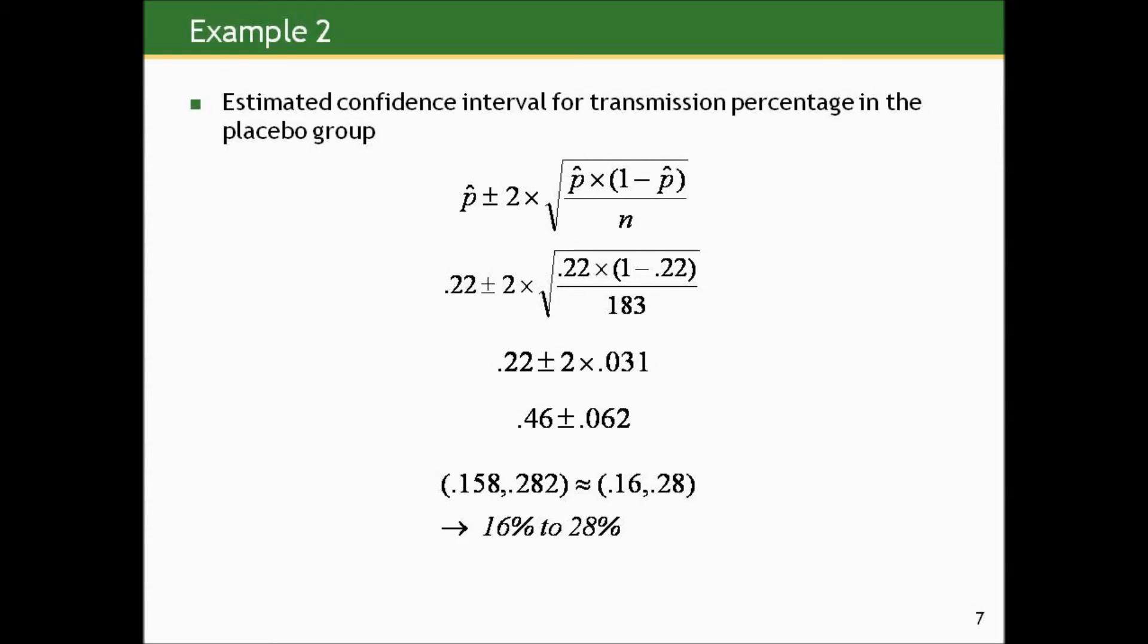So if we plug in the numbers for this and create a confidence interval, we get a confidence interval for the true proportion of infants that will contract HIV from mothers who are not treated, they were in the placebo group, between 16% and 28%. So even though there's a lot of variability in that interval, 16% to 28% isn't particularly precise, it does give some information.